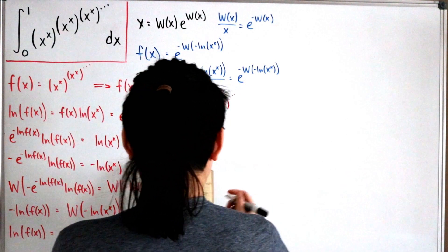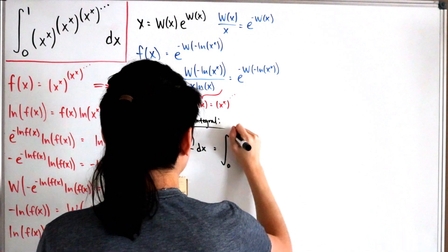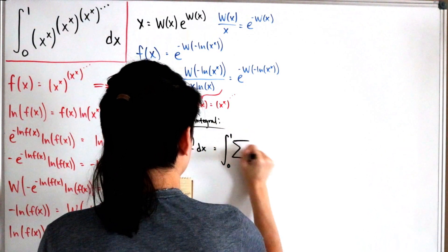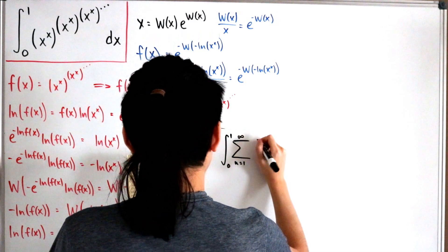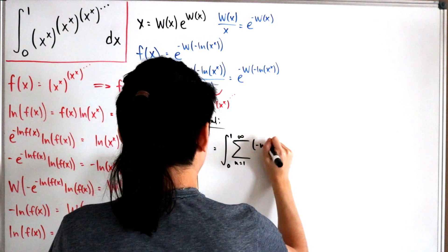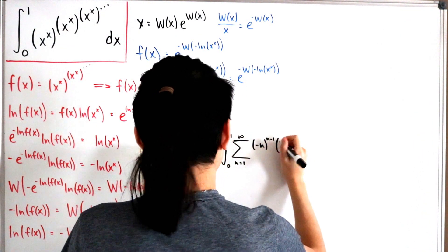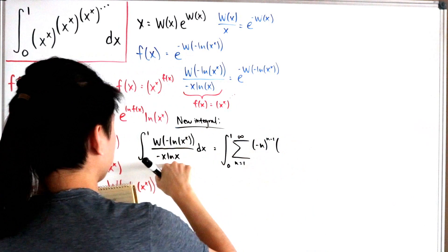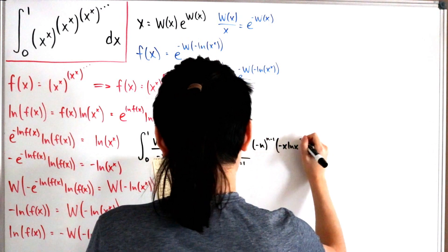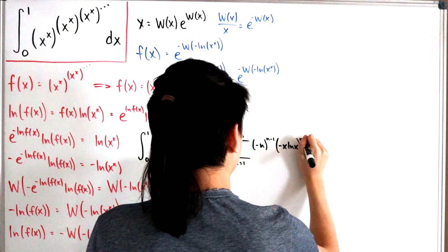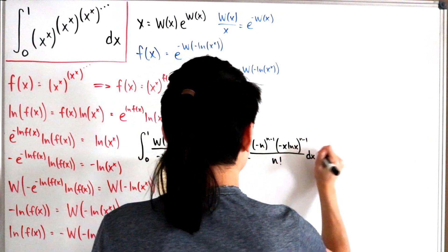Replacing W(negative ln(x^x)) with its Taylor series expansion: this is the infinite sum from n=1 of negative n to the power n−1, times the input (negative x times ln(x)) to the power n−1, divided by n factorial, then dx.